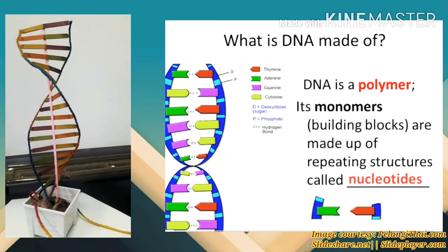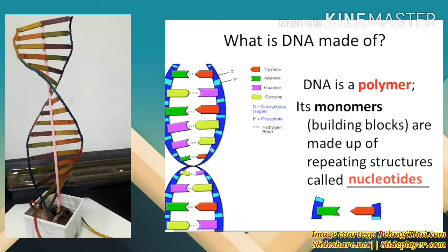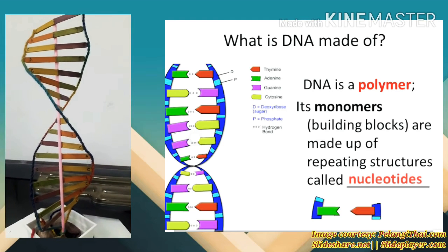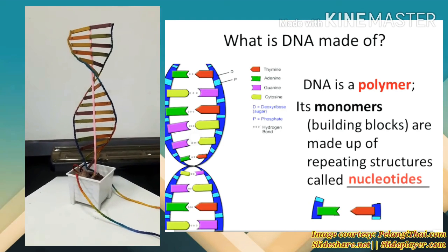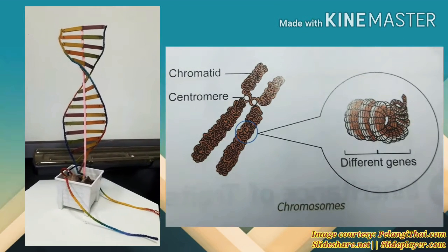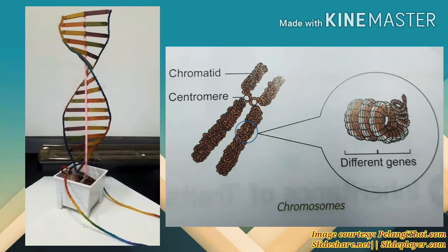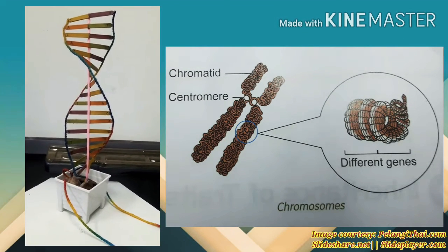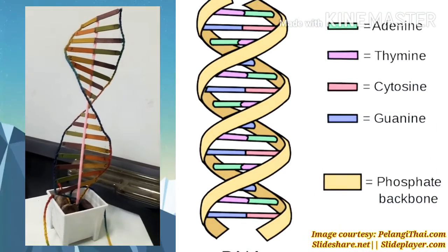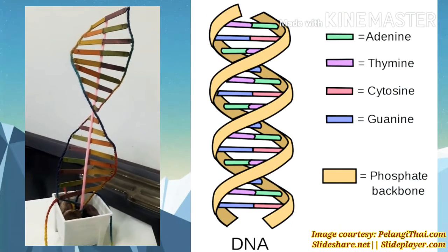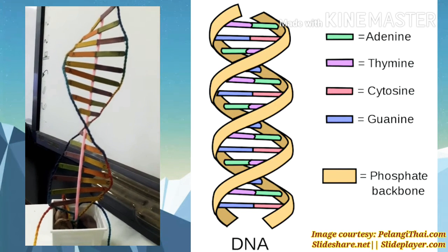The function of DNA is to store all the genetic information that an organism needs to develop, function, and reproduce. It is part of a biological instructions manual found in each of your cells. The instructions in DNA are written in a simple alphabet that has just four letters: A, T, C, and G.